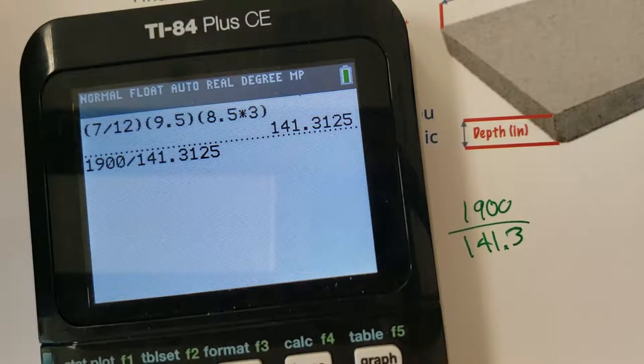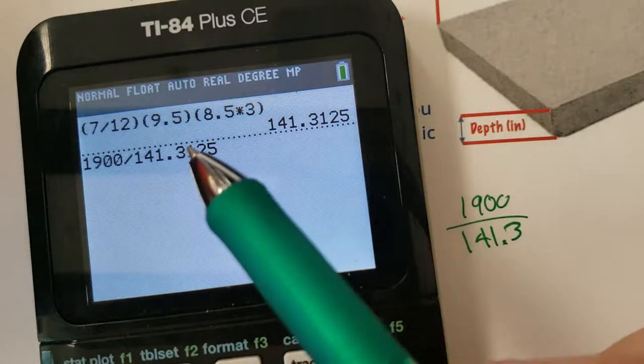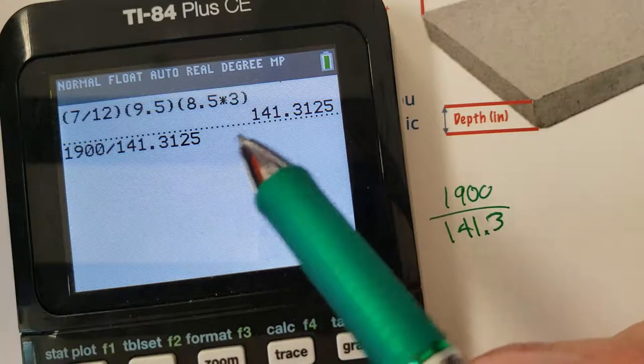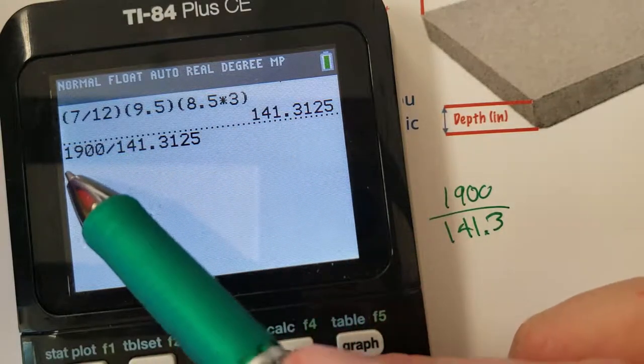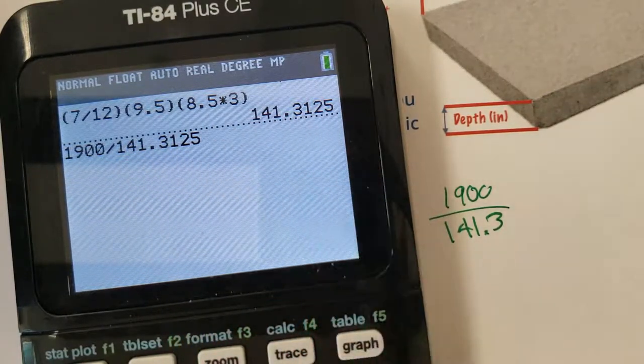Now, what did I do here? Now, I rounded to .3, but I still want to use as many decimals as possible to get the most accurate answer to the nearest cent.